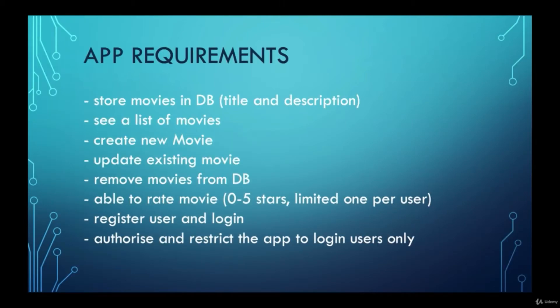So we have app requirements. Our application will be showing movies - it will be a movie rater. What we need to do is store movies in a database, storing title and description. Once stored in the database we need to create a list of these movies and be able to see that list. Then we need to be able to create a new movie and store it in the database, update an existing movie, and also be able to remove a movie from our database.